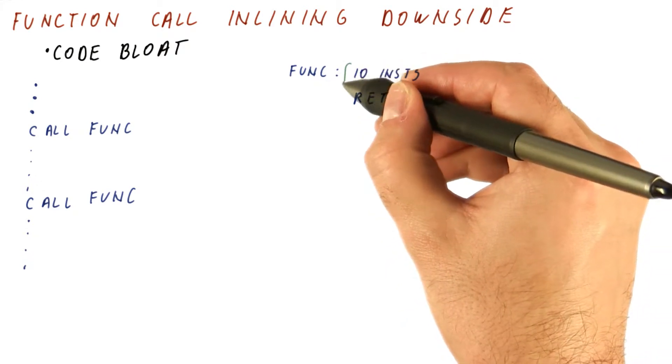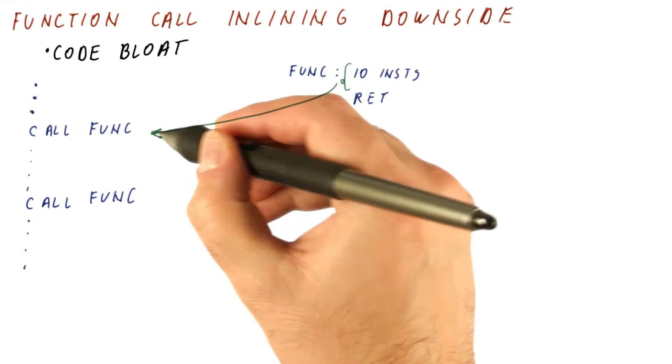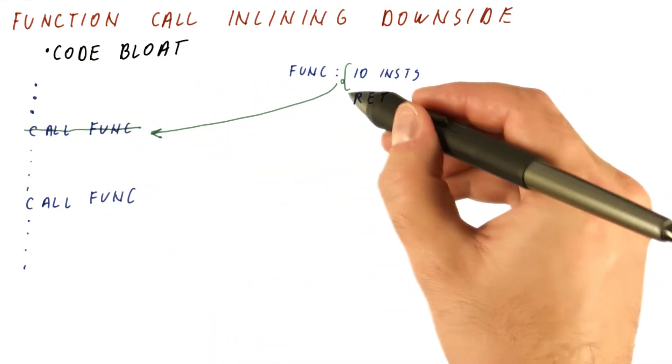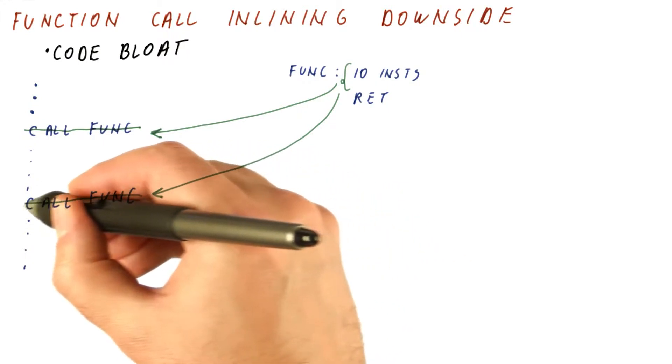So now when we do our inlining, what we will do is effectively put the 10 instructions here and replace the call. And also take the same instructions, put them here, and replace the call.